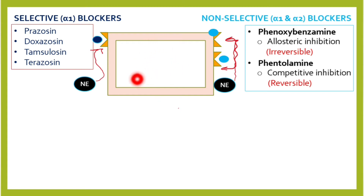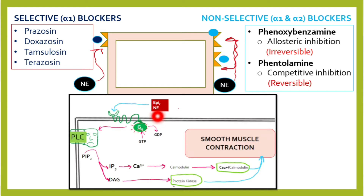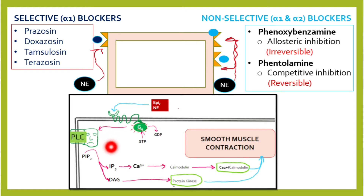Let's say this cell is a smooth muscle in the tunica media of blood vessels. Normally, epinephrine and norepinephrine bind to the seven-pass receptor coupled to Gq. After binding, it drops GDP and picks up GTP, becoming active. It then goes to the membrane where there is an enzyme called phospholipase C.